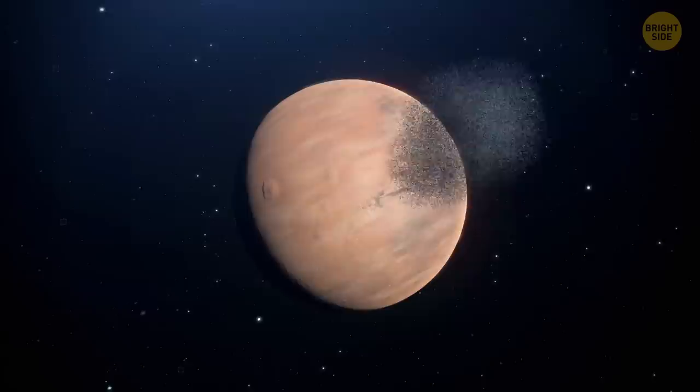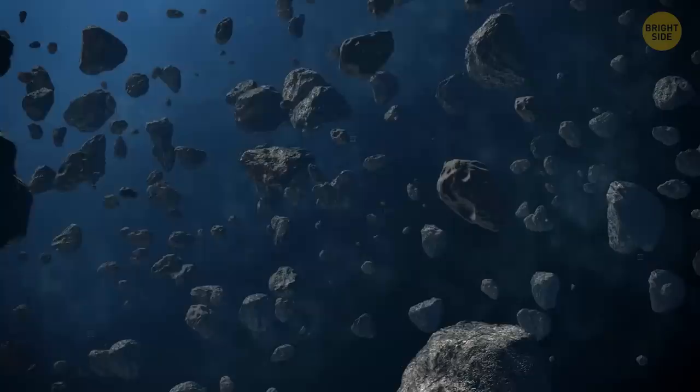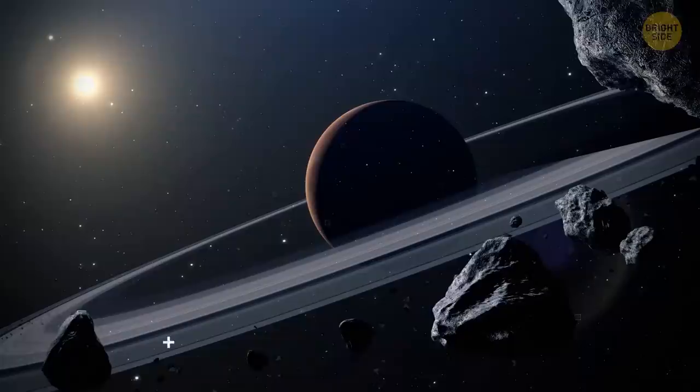Hey, it really will get mashed. Some chunks of the former moon will crash into Mars. And others will break apart and create the ring around the planet. This ring might exist for at least 100 million years.